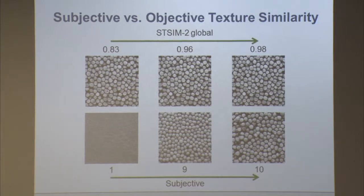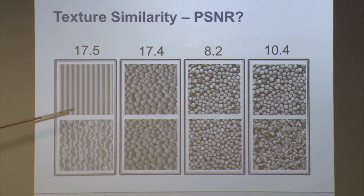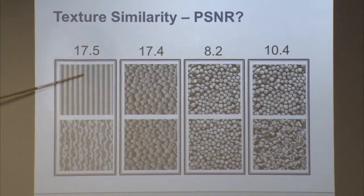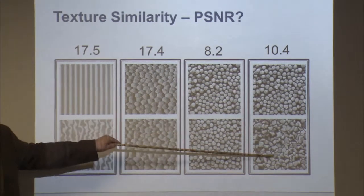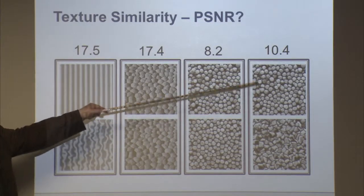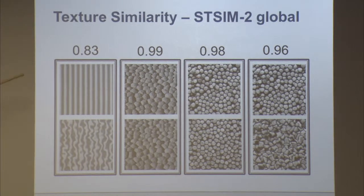Some of the metrics I've worked on at least point in the right direction — the higher the metric value, the more similar. Here is another example where a texture was distorted by warping: it gives the highest PSNR even though it's obviously different, while the same textures give the lowest PSNR. Some of the metrics we developed at least give the right ordering, even if the numbers aren't perfect.